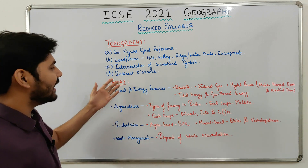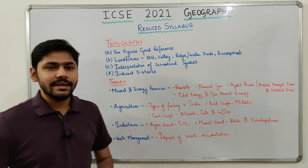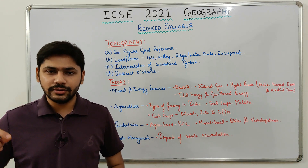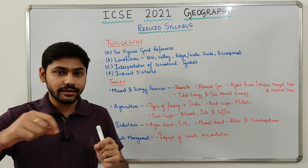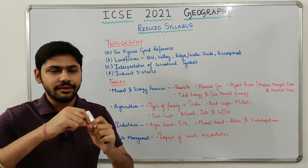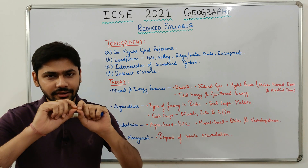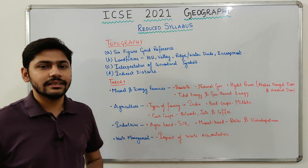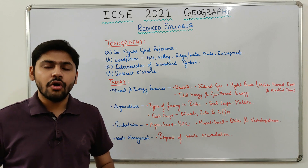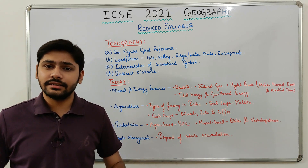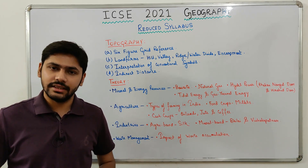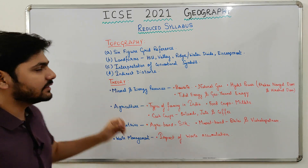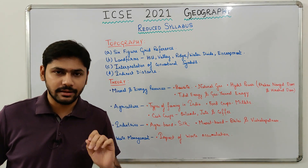Fourth, indirect distance has been removed — that is the road distance we used to find using strings to measure. So that has been removed and only direct distance remains in your syllabus. These are the four major things removed from the topography syllabus.